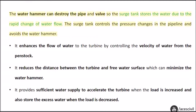The surge tank controls the pressure changes in the pipeline and avoids the water hammer. It enhances the flow of water to the turbine by controlling the velocity of water from the penstock. It reduces the distance between the turbine and free water surface, which can minimize the water hammer. It provides sufficient water supply to accelerate the turbine when the load is increased, and also stores the excess water when the load is decreased.